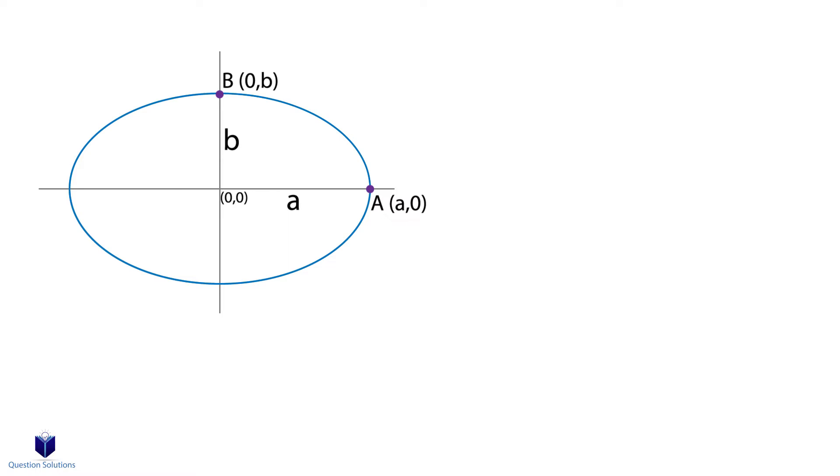When we need to find the maximum acceleration felt, then the radius of curvature must be the smallest, meaning we need rho to be equal to b squared over a. If the minimum acceleration is required, then rho is a squared over b. The bigger the curve, the less acceleration you feel. Whereas if it's a very tight turn, then you feel more acceleration.